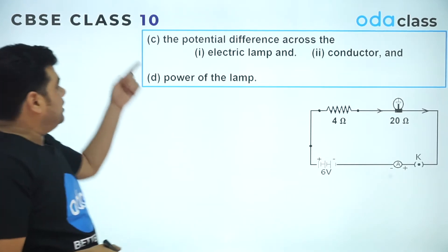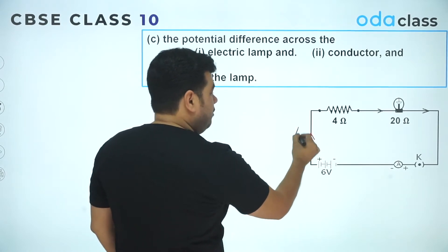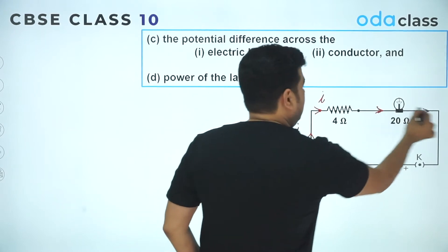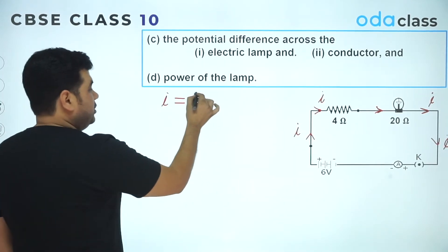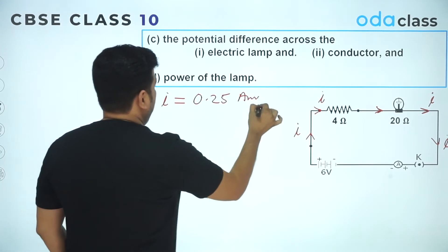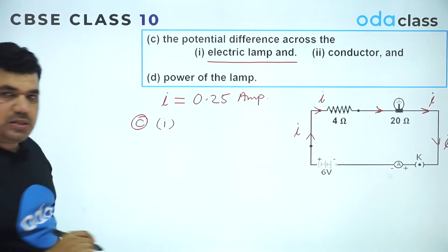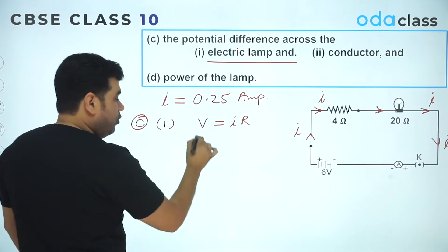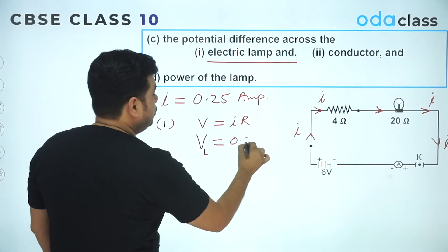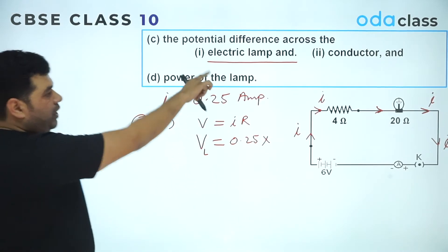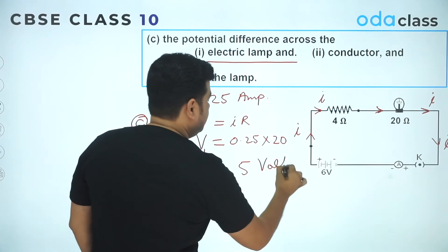For part (c), the potential difference across the electric lamp: current flows from the positive terminal through the circuit. We already know I = 0.25 ampere. Applying V = IR for the lamp: V_lamp = 0.25 × 20 = 5 volts. So the voltage across the lamp is 5 volts.